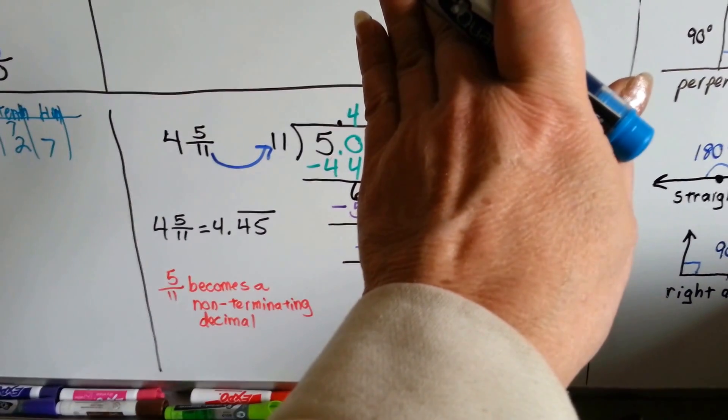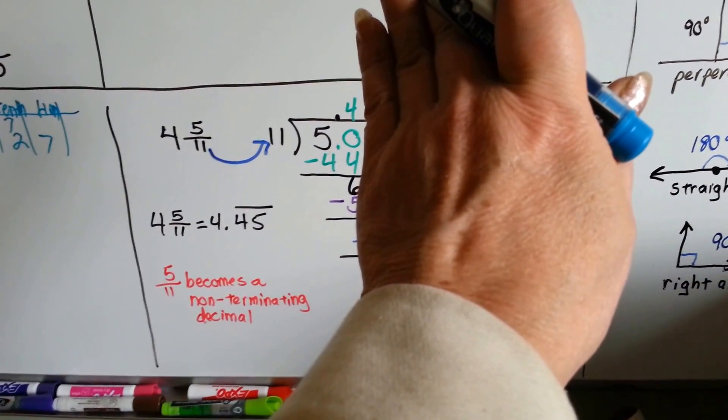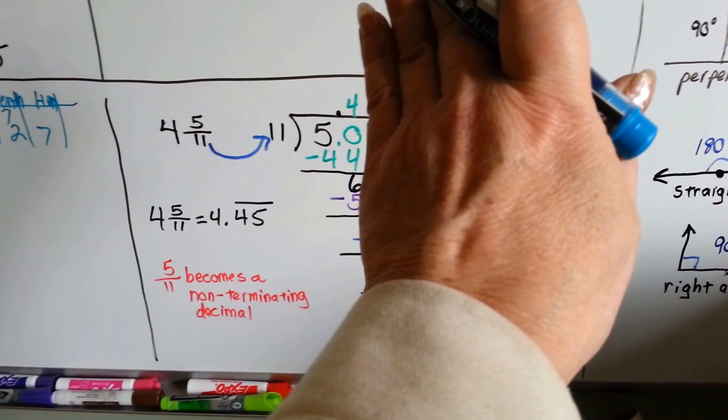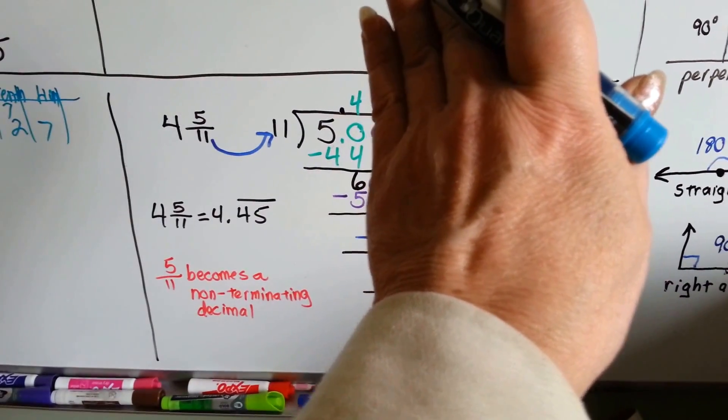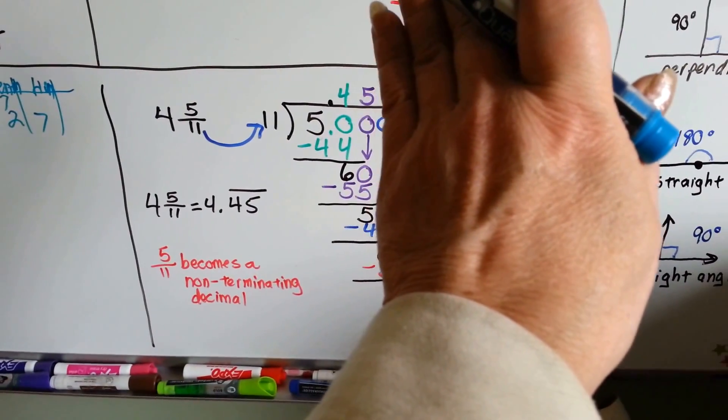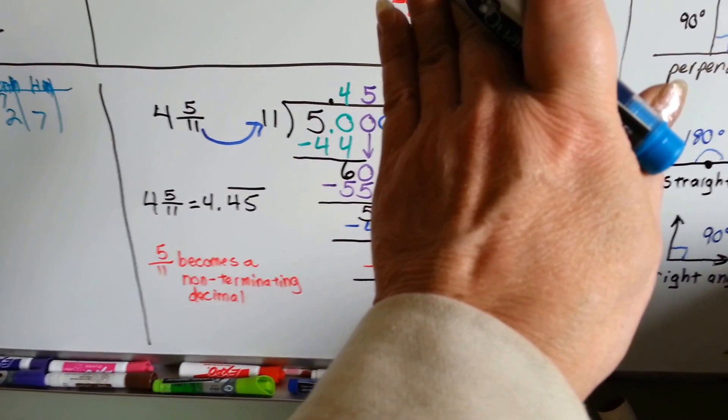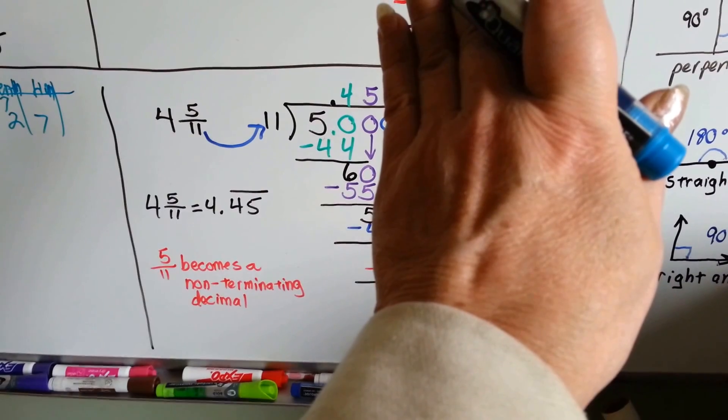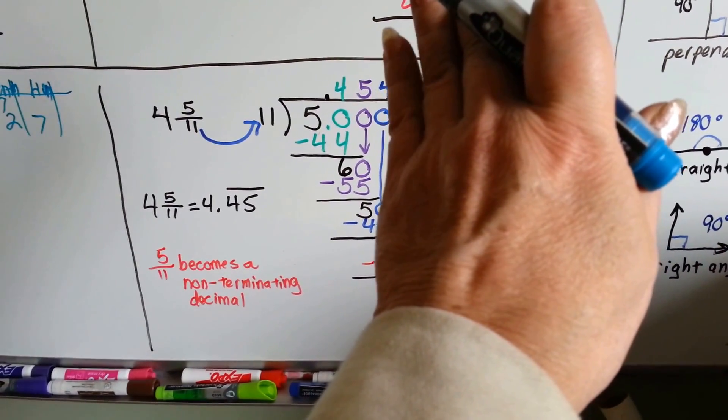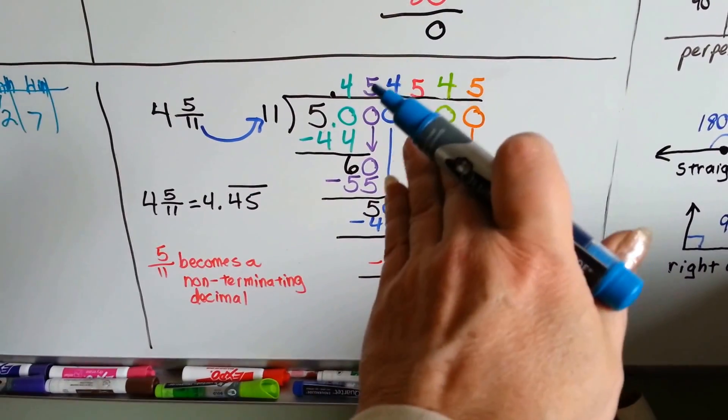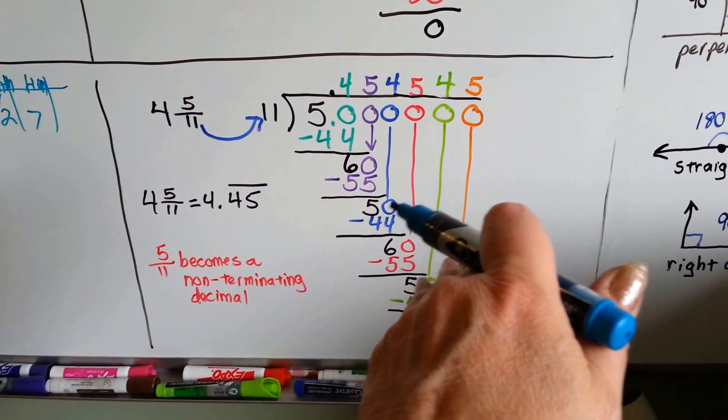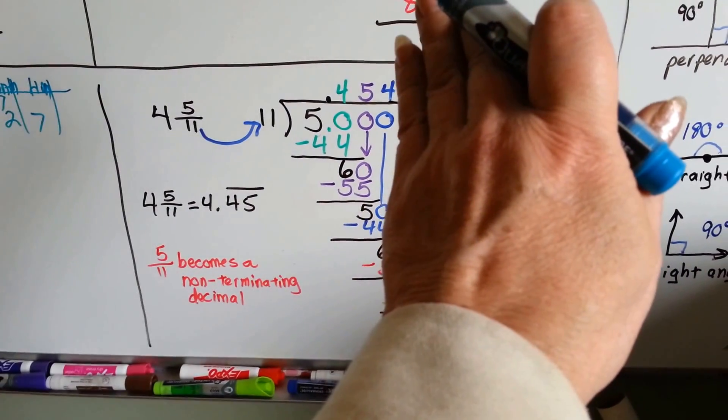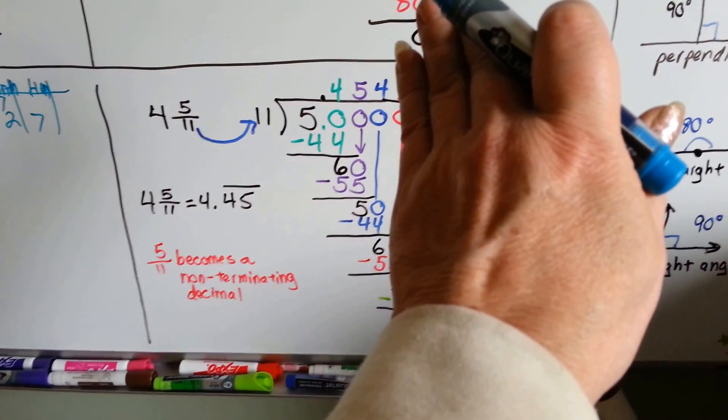Can it fit into 50 if we add a decimal point and a zero? Yep. 11 times 4 is 44, so we put the 4 up there. We did our subtraction and got 6. We added a zero. 11 fits into 60 five times because 11 times 5 is 55. So we did that and did our subtraction and got 5 left over.